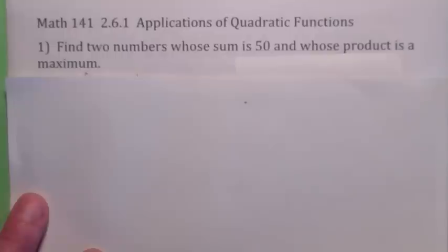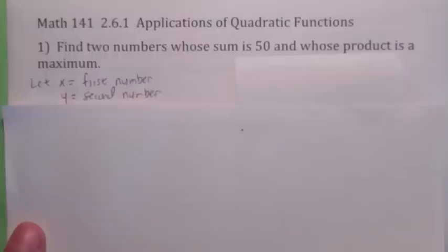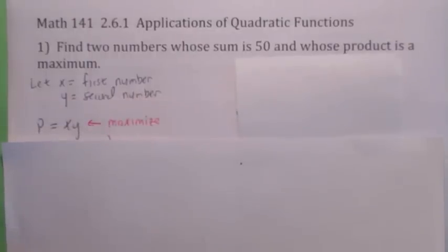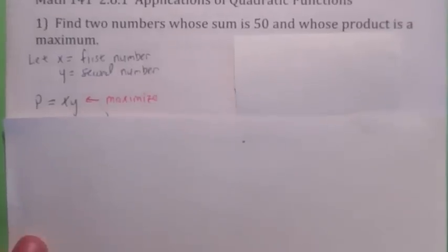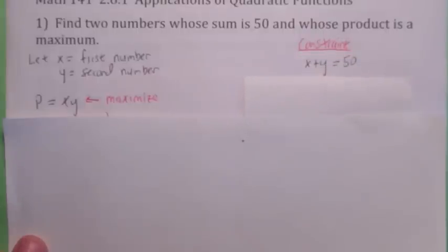In this particular problem, since we're talking about a maximum, our quadratic function is going to open down. So if x is the first number and y is the second number, the function involving the maximum will be the product of the numbers. But we really can't look at the vertex until we get this in terms of one unknown. So there's always going to be another equation lurking around — that's called the constraint equation. In this case, the other equation is x plus y equals 50. This is constant, this is always going to be true, so you can use this information.